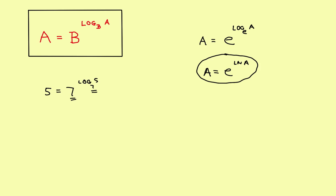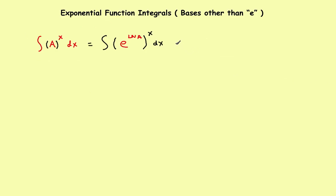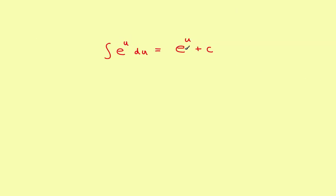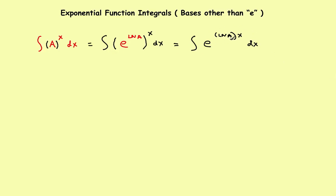With that in mind, let's go back and finish up our problem. The next thing I'm going to do is this: whenever you have a power raised to a power, you can multiply those together. So this is going to become the integral of e raised to the natural log of a times x, dx. Because it's something more complicated than just a simple x, you're going to have to use u-substitution.